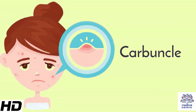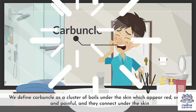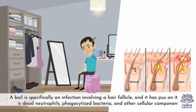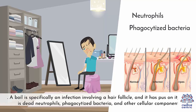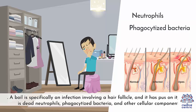Today's topic is carbuncle. We define carbuncle as a cluster of boils under the skin which appear red, swollen, and painful – and they connect under the skin. A boil is specifically an infection involving a hair follicle – and it has pus on it, which is dead neutrophils, phagocytized bacteria, and other cellular components.